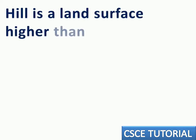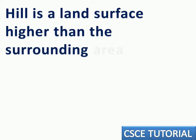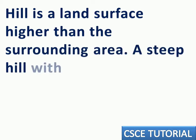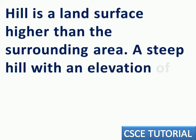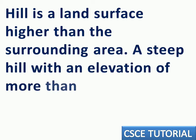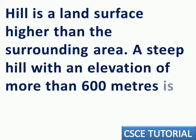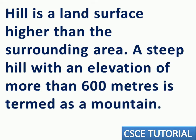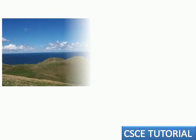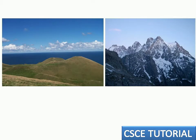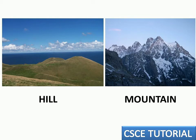A hill is a land surface higher than the surrounding area. A steep hill with an elevation of more than 600 meters is termed as a mountain. So if the height of a hill is more than 600 meters, we call it a mountain.